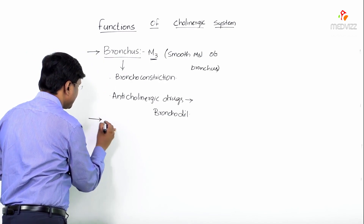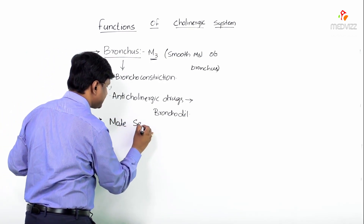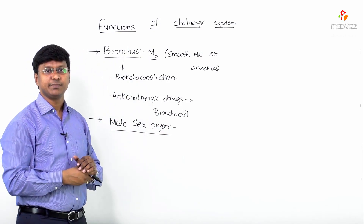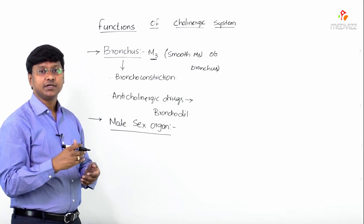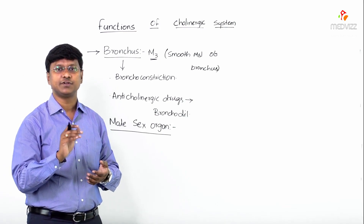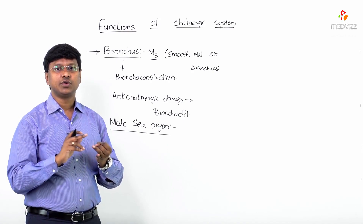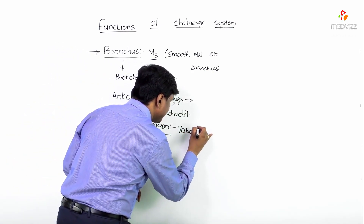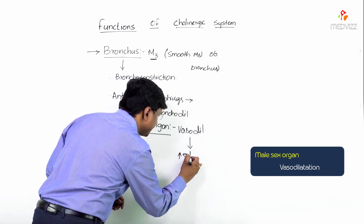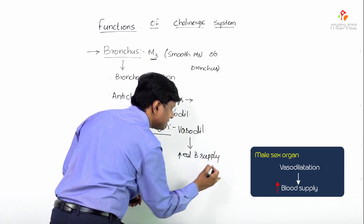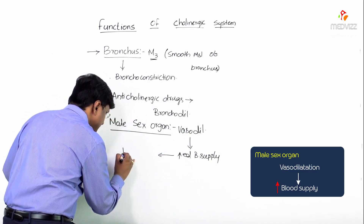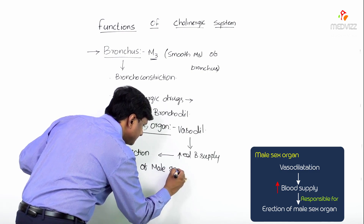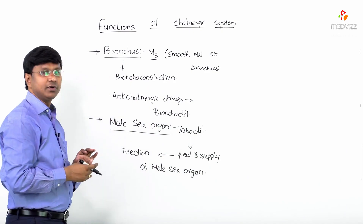Next, the effect of the cholinergic nervous system on the male sex organ. The cholinergic nervous system causes vasodilation of blood vessels. Due to this vasodilation, there is increased blood supply, and because of this increased blood supply, the cholinergic system is responsible for the erection of the male organ. That is the effect of the parasympathetic nervous system on the male sex organ.